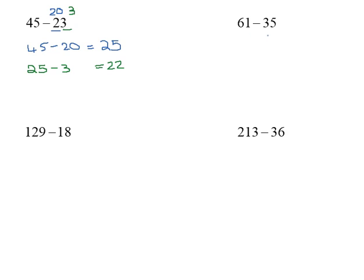61 subtract 35, if I partition this the 3 represents 30 and the 5 represents 5. So breaking it down into two steps, 61 subtract 30 leaves me with 31, and then 31 subtract 5 takes me back to 26.